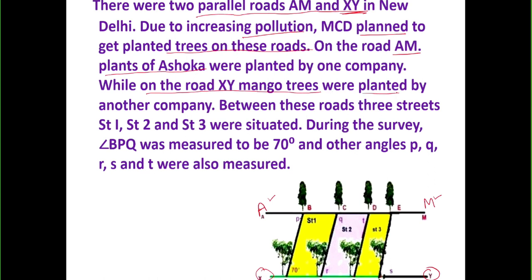Mango trees were planted along road XY. Between these roads, three straight streets — street 1, street 2, and street 3 — were situated. During the survey, it was found that angle BPQ is 70 degrees. Other angles at points P, Q, R, S, and T need to be calculated. Let us first calculate all these unknown angles.